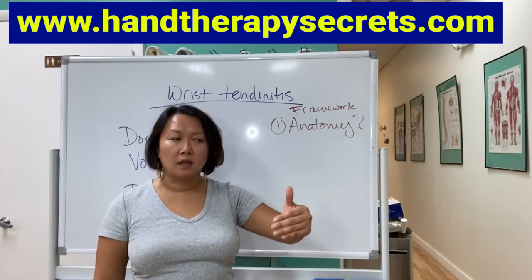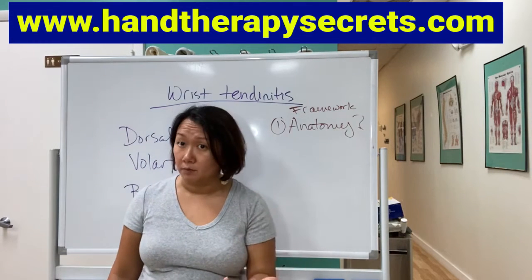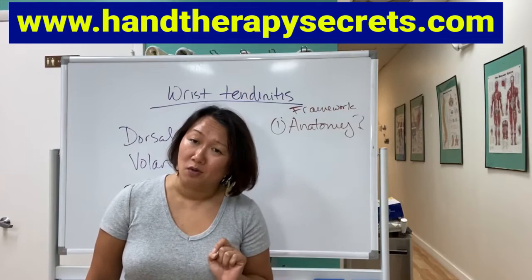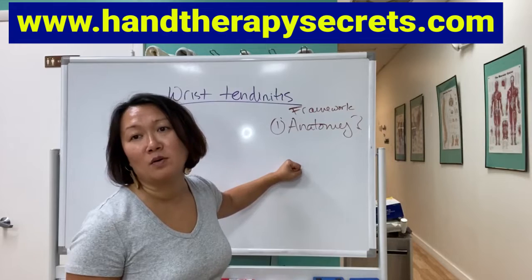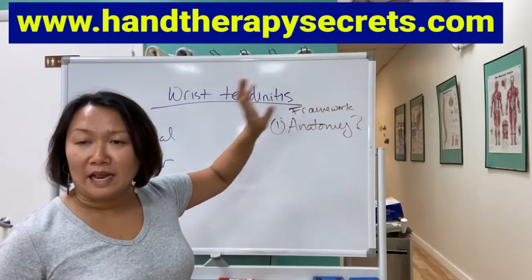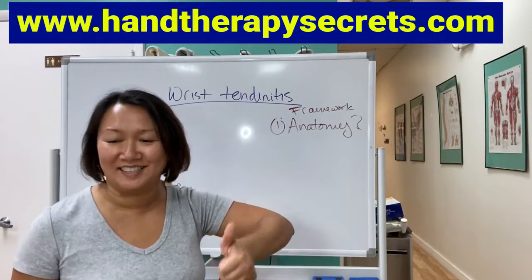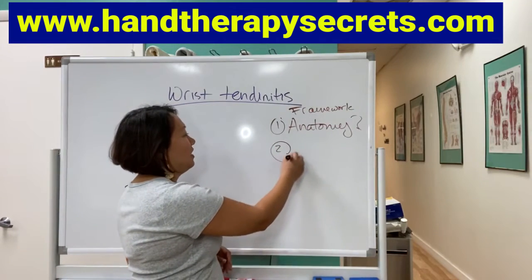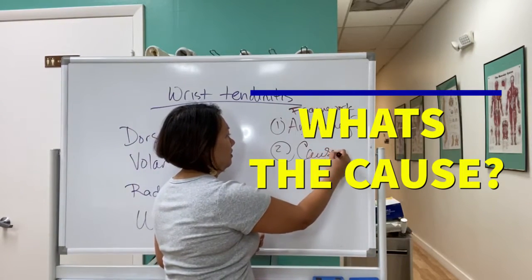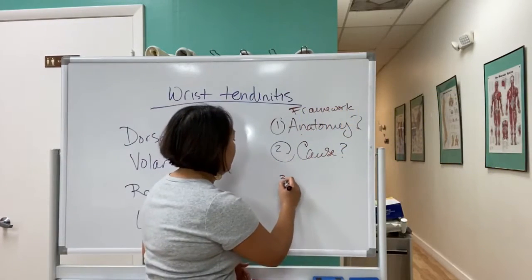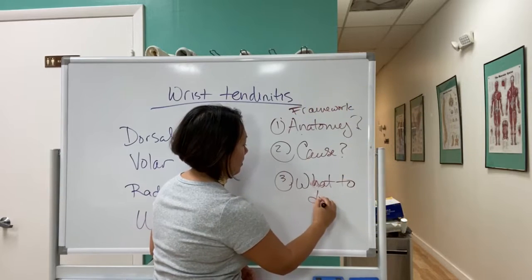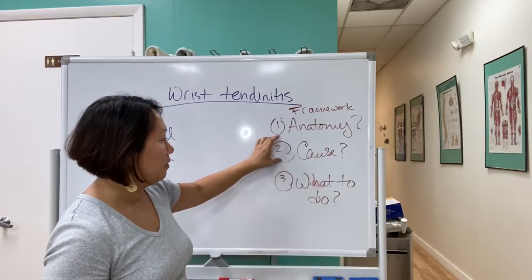As you're studying for the CHT or getting more cases, you can go more in depth. But for a general case, you already know there are eight carpal bones, along with a radius and ulna — that's good enough. There are three steps: if you know the anatomy and then you know the cause, then you can know what to do.